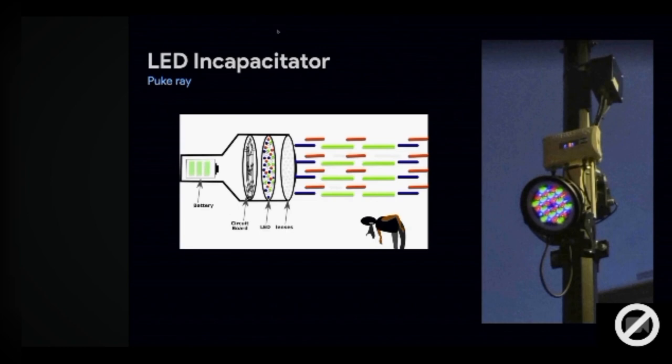It's called an LED incapacitator, also known as a PUCRE. It's meant to disarm so-called dissidents and terrorists.